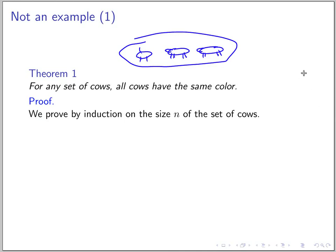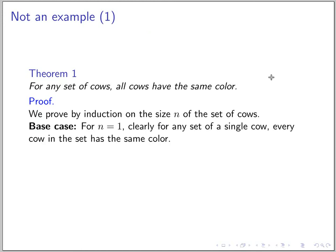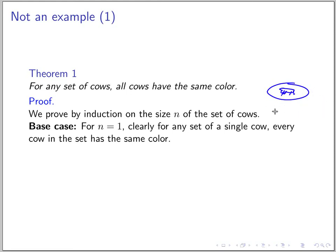So we prove by induction. This is for any set of cows, so we prove induction on the size N of the set. In the base case, for N equals one, if you have a set with a single cow, a single cow has just one color — whatever color you like — so every cow in the set has the same color because there's only one cow.